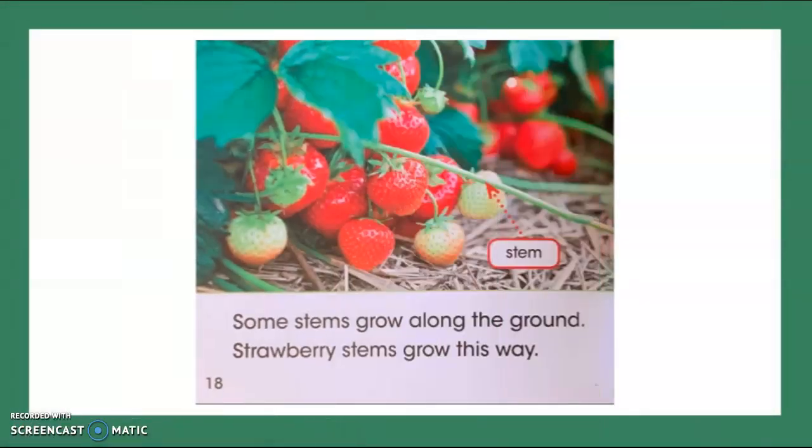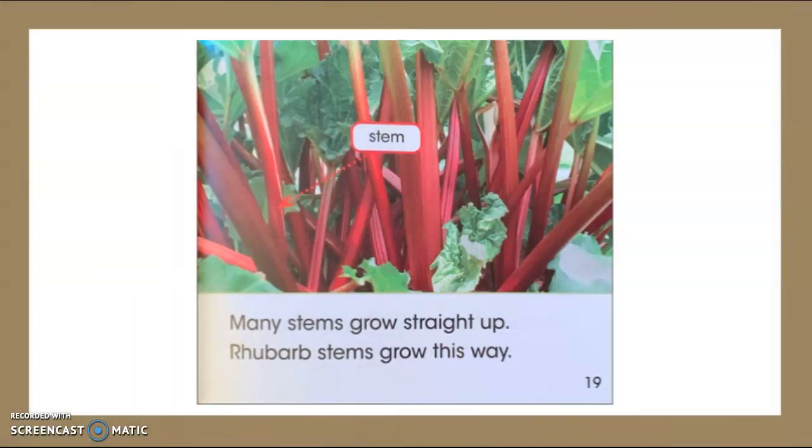Some stems grow along the ground. Strawberry stems grow this way. Many stems grow straight up. Rhubarb stems grow this way.